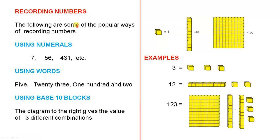Recording numbers. The following are some of the popular ways of recording numbers. The first one is using numerals: 7, 56, 431. These are the numerals or the symbols, and when we write them down, we know what number we're talking about.